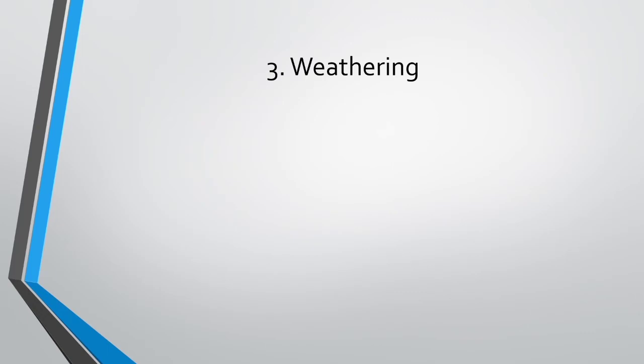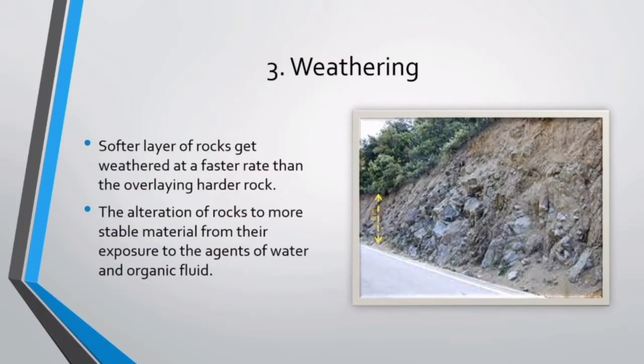Third to consider is weathering. In some cases, when the strata along or under a cut is composed of layers of rocks of different hardness, the softer layer gets weathered at a faster rate than the overlying or underlying harder rocks. This generally results in undermining, which might cause lifts or falls of the whole place. Sometimes, when the top layers are weathered too heavily, the slope might experience persistent rockfall or debris fall from above.